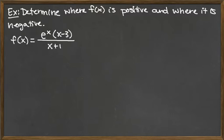If we're going to use the intermediate value theorem to be able to determine this, we know that the only possible places where it could change from positive to negative or vice versa would be at places where it's either 0 or undefined. And so we've got to find that out first.